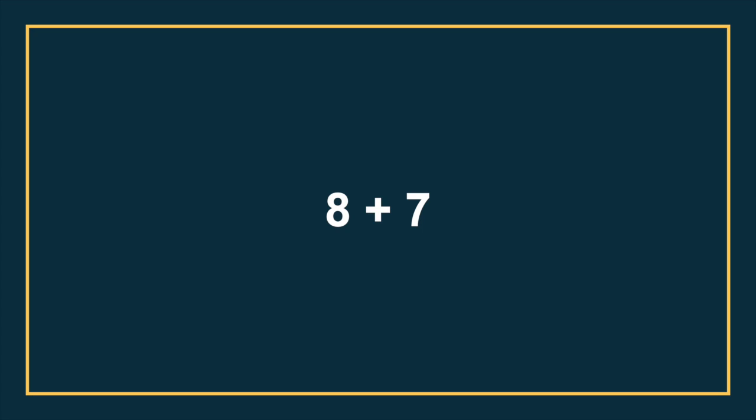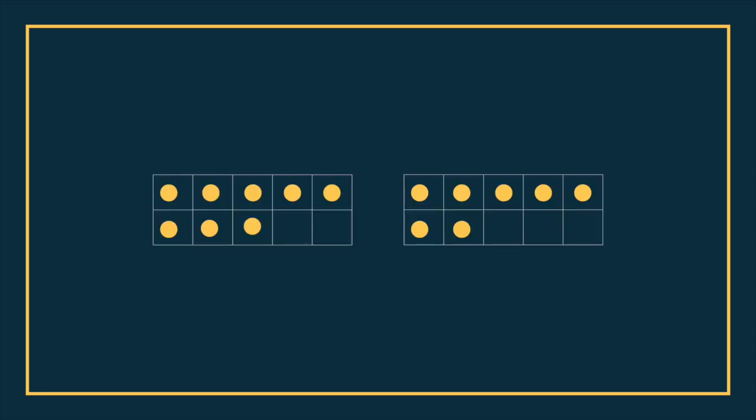Let's start off with single-digit addition and take a look at how kiddos might think about 8 plus 7 if they see 8 plus 7 in 10 frames. Typically when we show 8 plus 7 in a 10 frame, it might look like this. I'm saying typically because this isn't the only way to show an amount in a 10 frame — I am just showing this one way as an example.